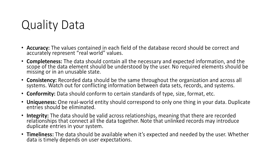So what is quality data? Accuracy: the values contained in each field of the database record should be correct and accurately represent real-world values — a recorded address should be a real address, and names should be spelled correctly. Completeness: the data should contain all the necessary and expected information, and no required element should be missing or in an unstable state — for example, if first and last name are required in a form but middle name is optional, the form can still be considered complete if no middle name is entered. Consistency: recorded data should be the same throughout the organization and across all systems — watch out for conflicting information between datasets, records, and systems. Conformity: data should conform to certain standards of type, size, and format — for example, all dates should be in month/day/year format, and names should use only letters, not numbers or symbols.